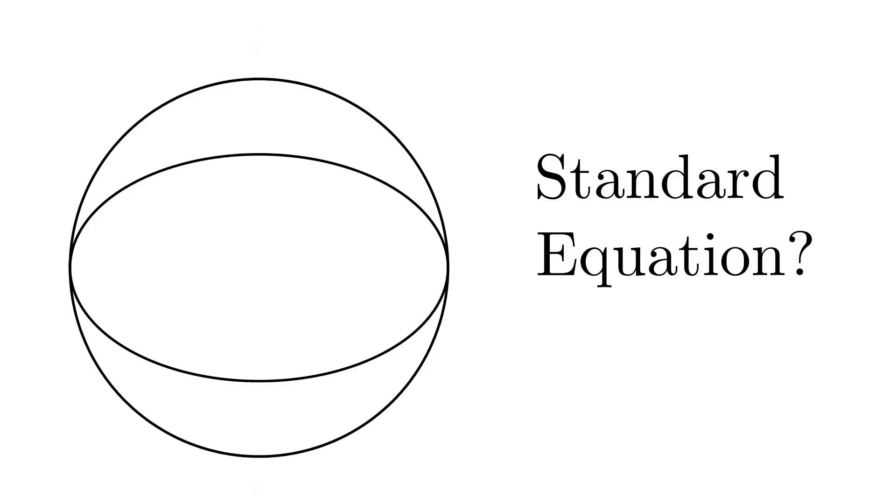In this video, we'll see how we can get the equation of an ellipse, specifically the standard equation. We'll rely on the fact that we can get an ellipse by shrinking a circle in one direction.